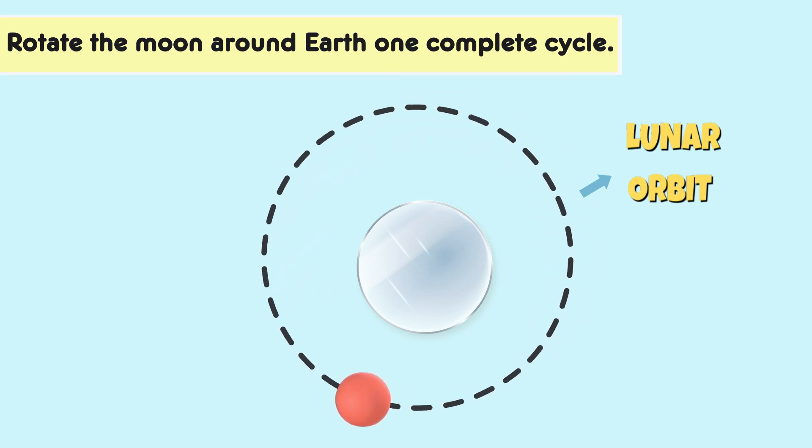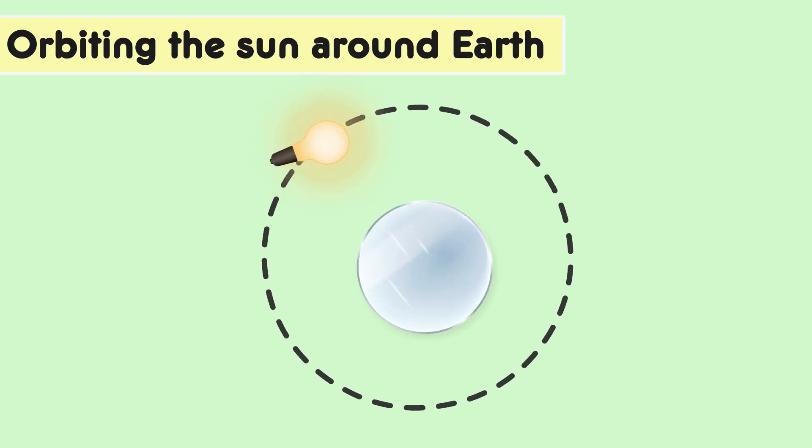Orbit the Sun around Earth isn't a scientifically accurate representation, as it is the Earth that orbits the Sun, not vice versa.